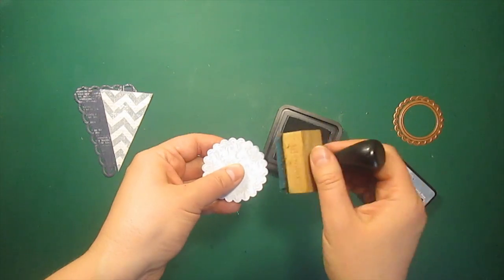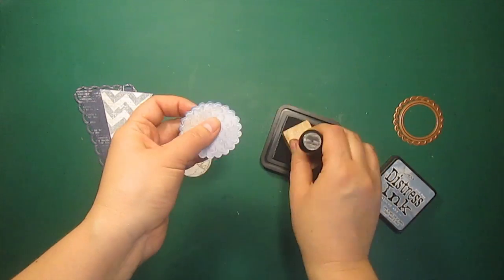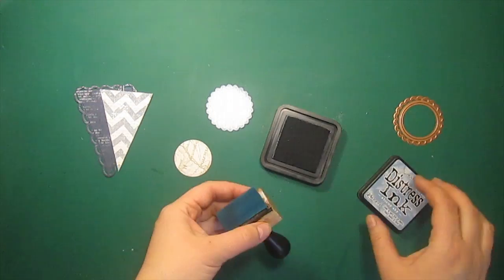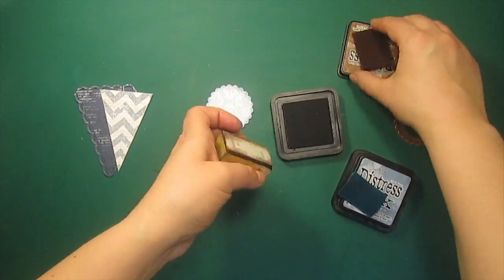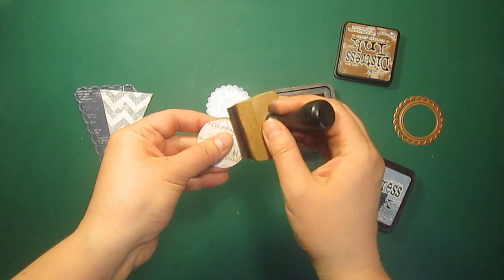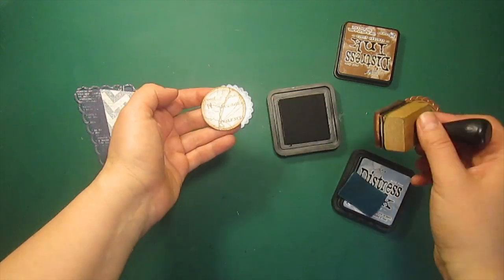I've also die-cut plain and scalloped circles using the same pattern paper pad and I'm going over the edges with the stormy sky and vintage photo distress inks.